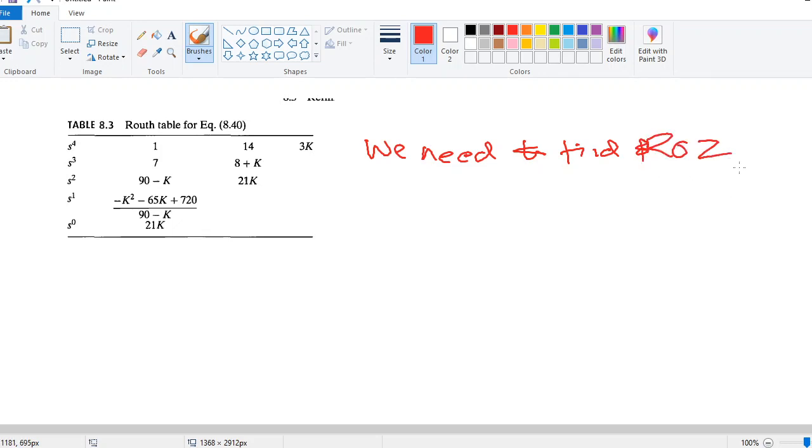The rule here is that the row of zeros should have a positive value of K. K cannot be zero, nor can it be negative. The row of zeros that we find should be one where the value of K should be greater than zero. So, let's try.